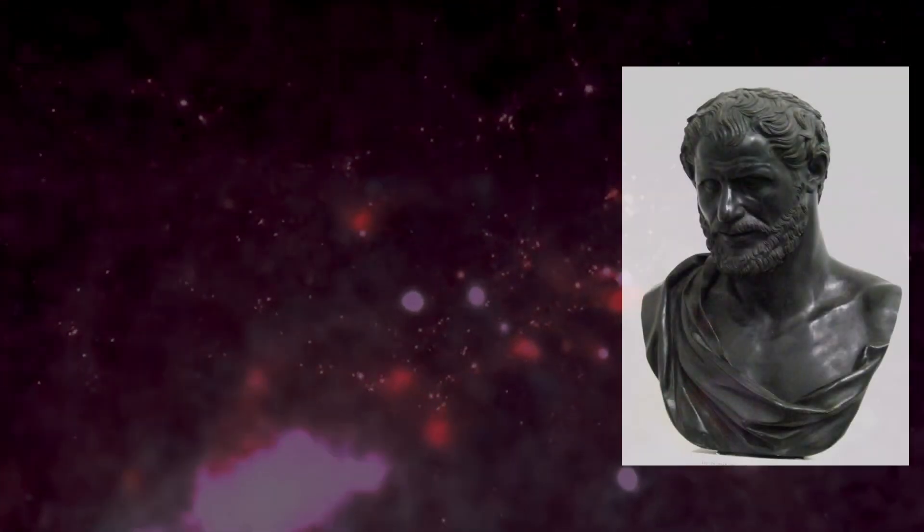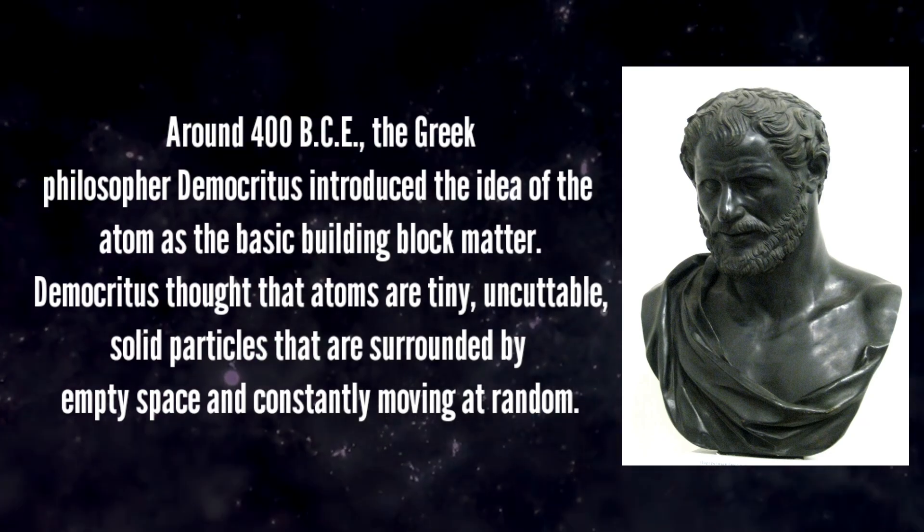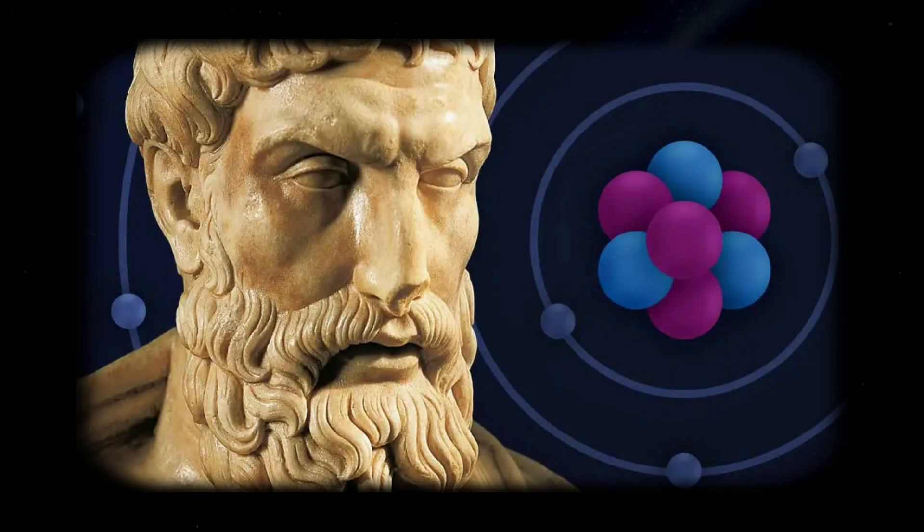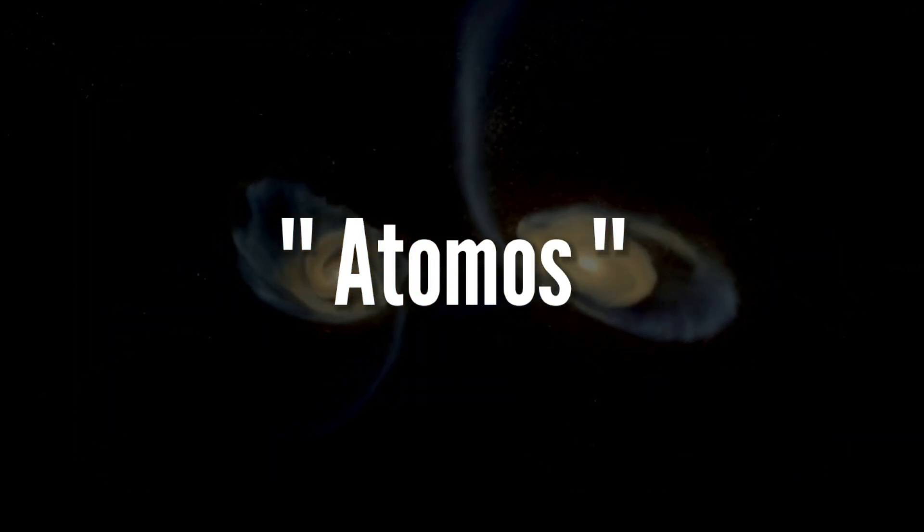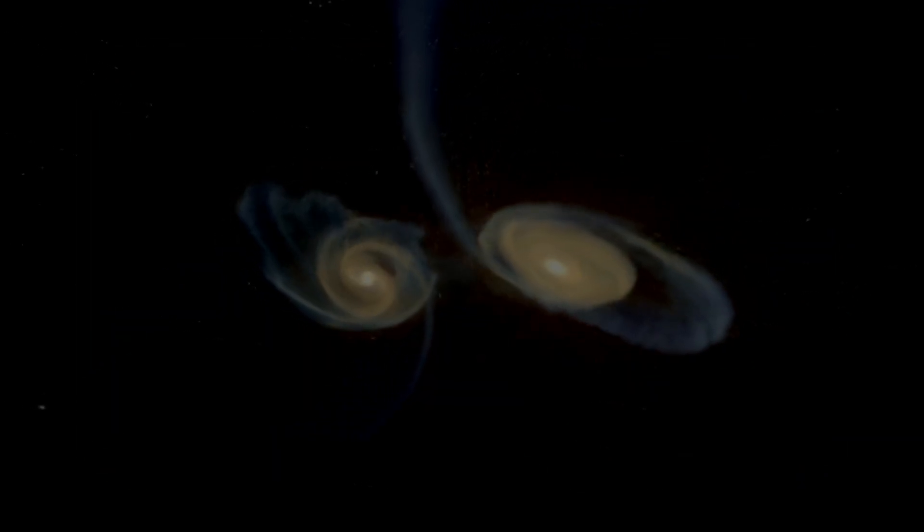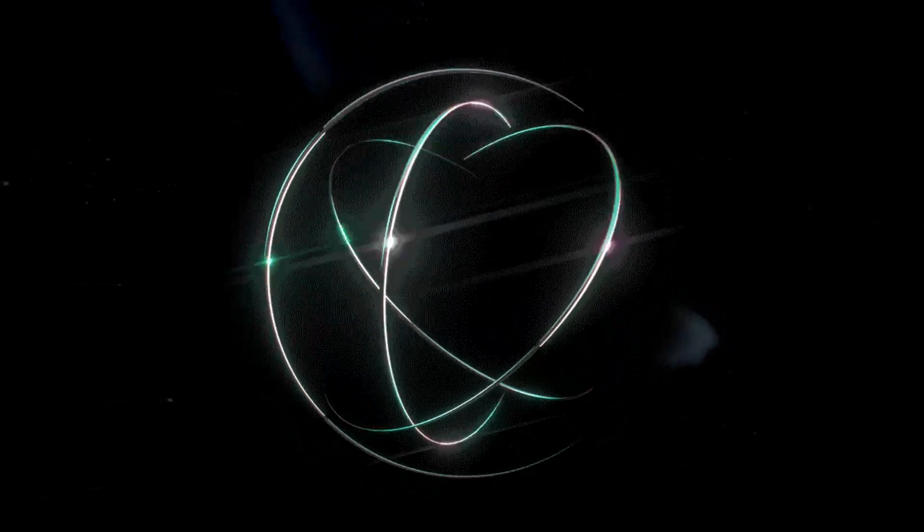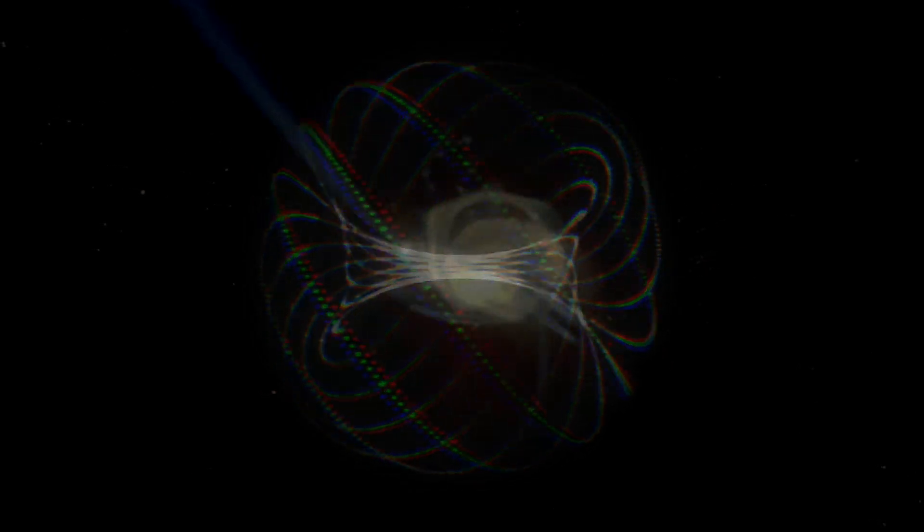One of these thinkers was Democritus, who proposed the concept of atoms. He believed that all matter was composed of small, indivisible particles called atomos, a term derived from the Greek word for indivisible. He believed these atoms have finite shape of existence and they have the ability to join together and differ in shape and size.